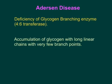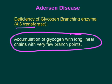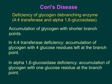Anderson disease is caused by deficiency of glycogen branching enzyme — amylo alpha-1,4 to alpha-1,6 transferase (4-6 transferase). It is diagnosed based on the type of glycogen accumulated: glycogen with long linear chains and very few branch points. This makes sense since the branching enzyme is deficient, resulting in very few branch points — an important diagnostic clue for Anderson disease.